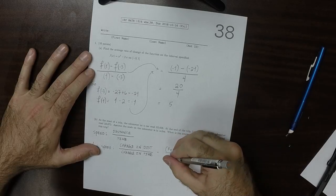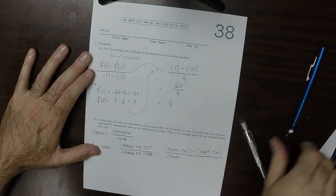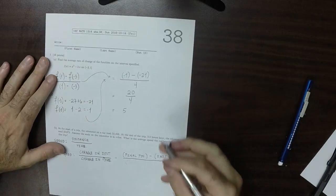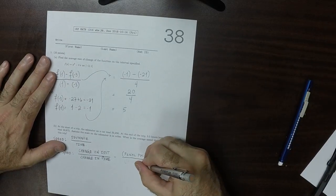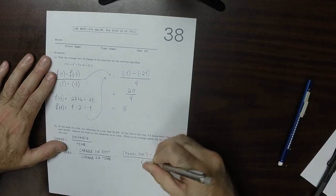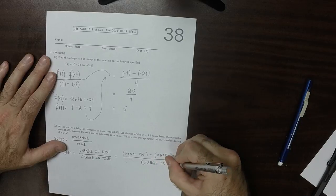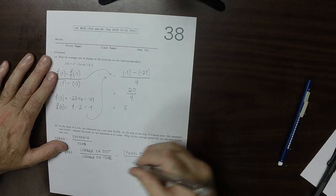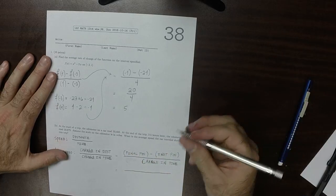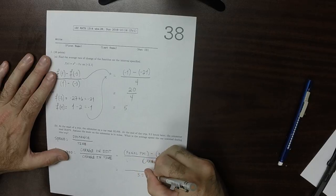And then the change in time will be the final. In fact, it doesn't give you the initial and final time. It just says that it takes 3 and a half. So it just tells you the change in time. So that would be, the denominator would be 3.5 hours.